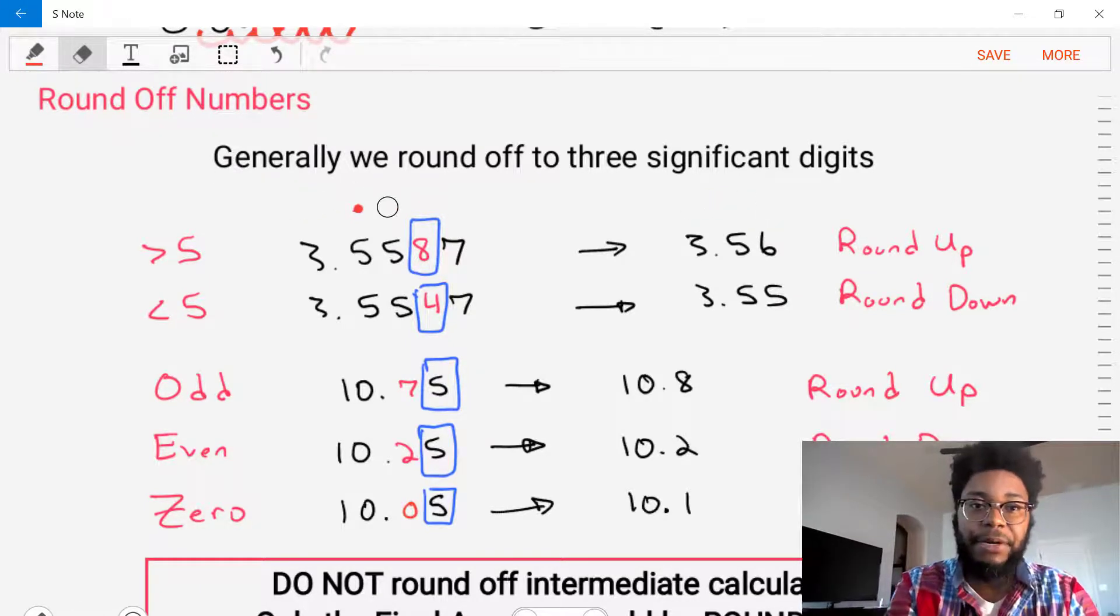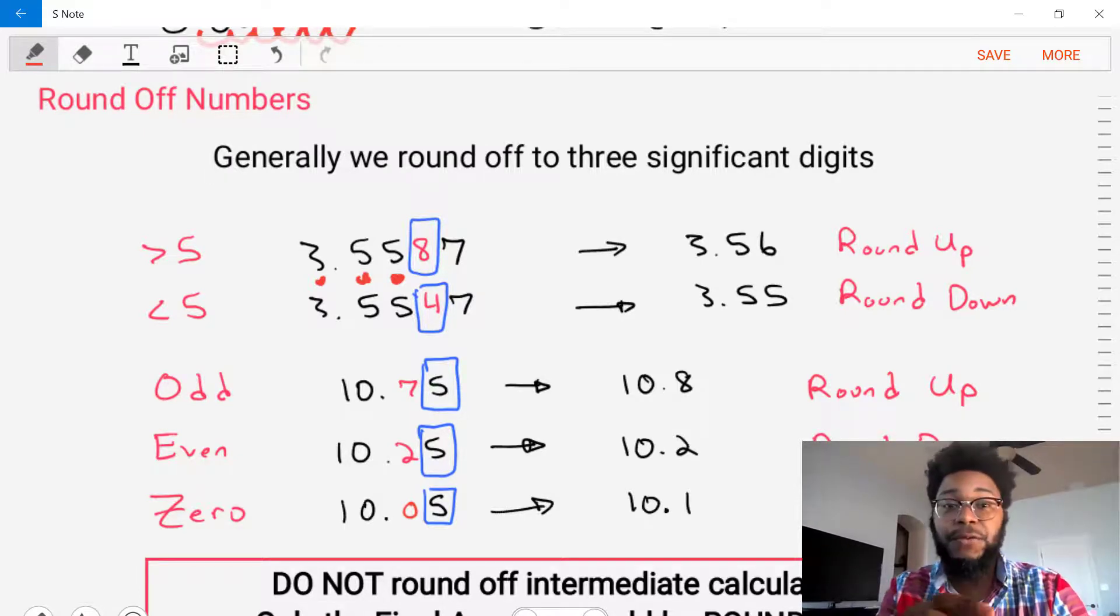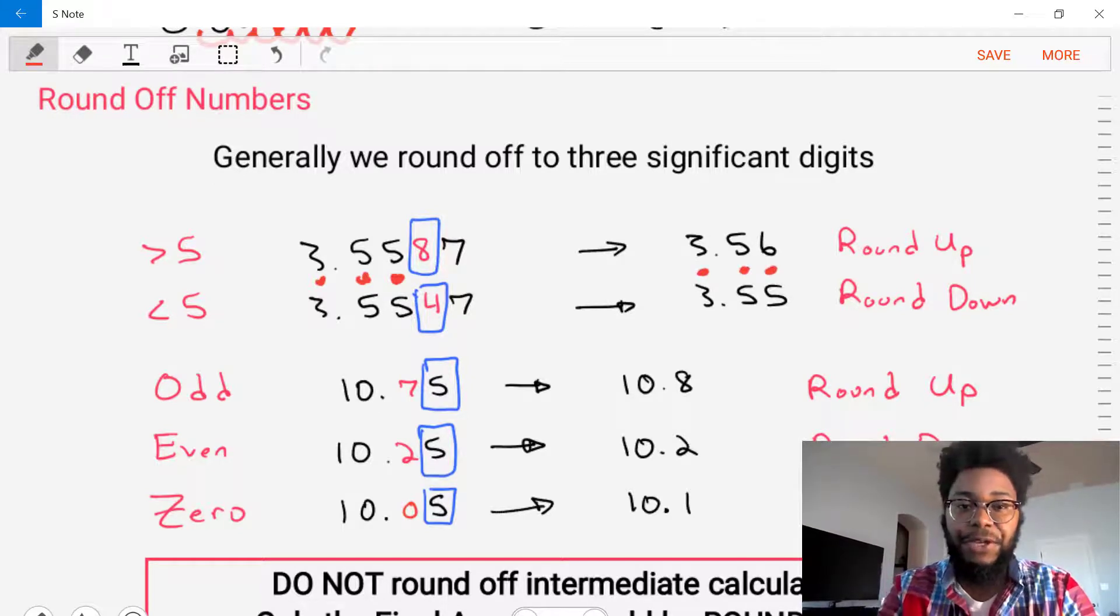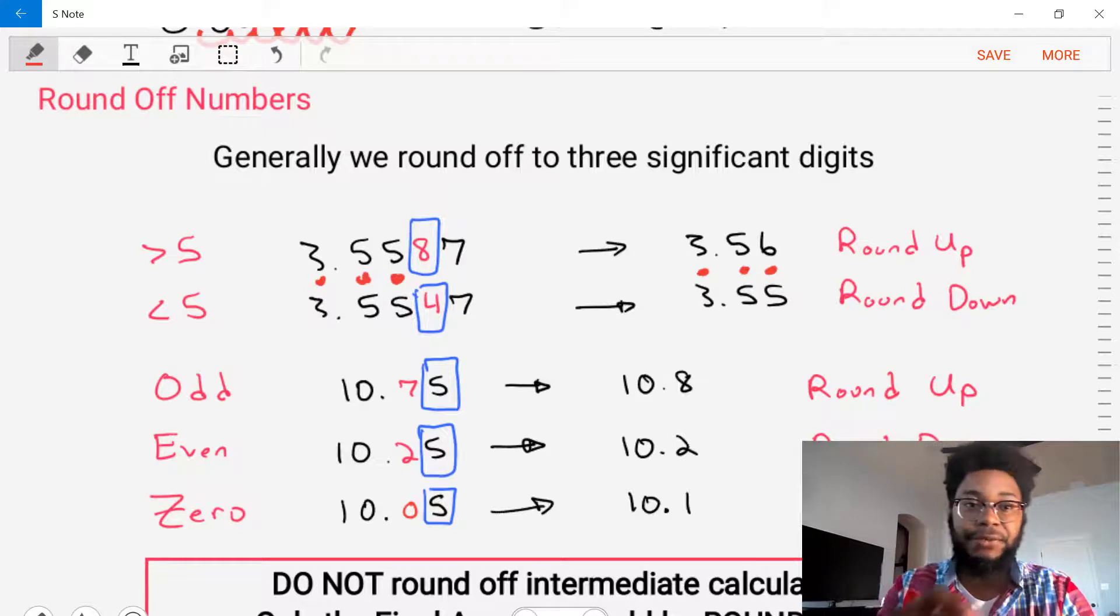Let's repeat that process, but for a number that's a little different. Let's repeat it for 3.5547. We select our three significant digits, 3.55, and we analyze the fourth digit. This fourth digit is less than 5. So we're going to round down this answer. And by rounding down, what we are actually going to do is stay at the value that we initially had. So our rounded down answer is 3.55. That is rounding down.